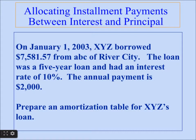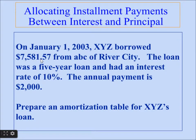Let's see an example of how we can allocate an installment payment between interest and principal. On January 1, 2003, XYZ borrowed $7,581.57 from ABC of River City. The loan was a 5-year loan with an interest rate of 10%, and the annual payment is $2,000.